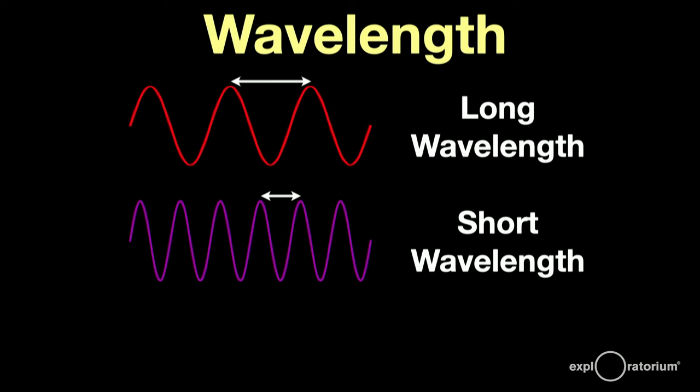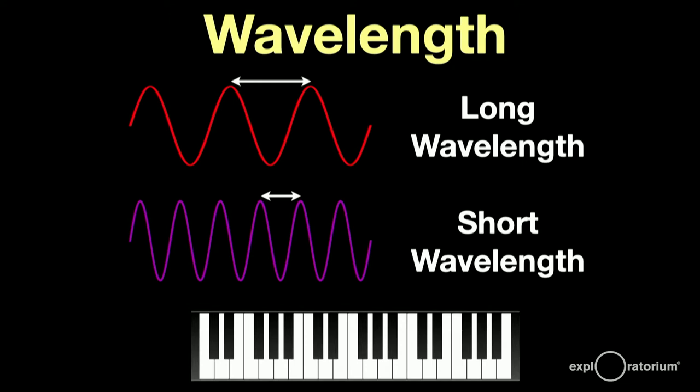If we played these two waves on a piano, the red wave might sound like this, and the violet wave would sound like this, an octave apart. As a matter of fact, red and violet light wavelengths and frequencies are about an octave apart. We can see an octave of light.